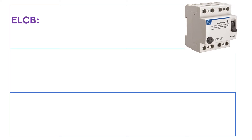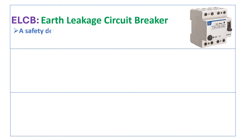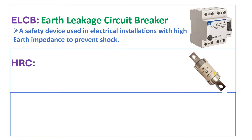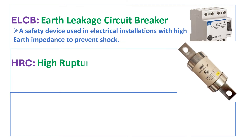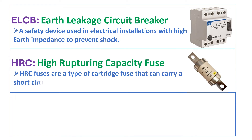ELCB stands for earth leakage circuit breaker. ELCB is a safety device in electrical installations with high earth impedance to prevent electric shock. HRC stands for high rupturing capacity fuse. HRC fuses are types of cartridge fuse that can carry a short circuit current for a set time period.